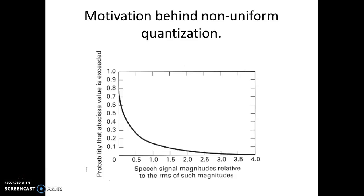As an example, let us see speech signal magnitudes relative to the RMS of such magnitudes. So the speech signal intensity is on x-axis and on the vertical y-axis, you have the probability that the signal takes those values. You will see that the high probability lies between 0 and 0.5, and between 0 and 0.5 there is concentration of maximum probability.